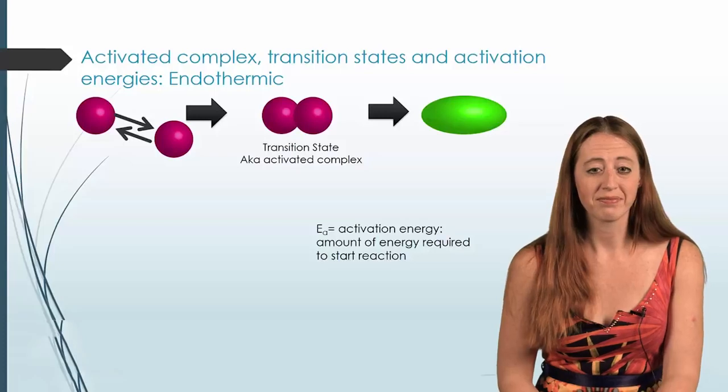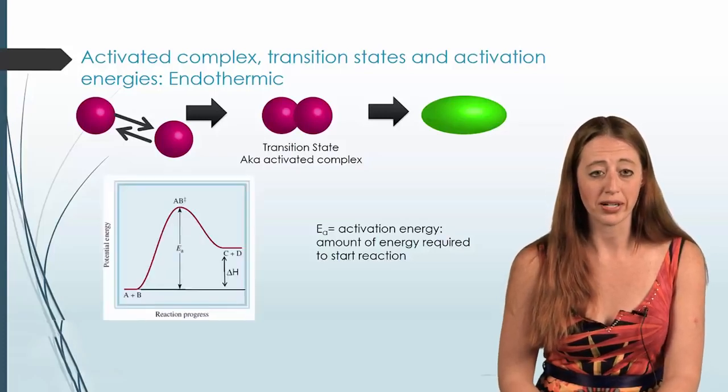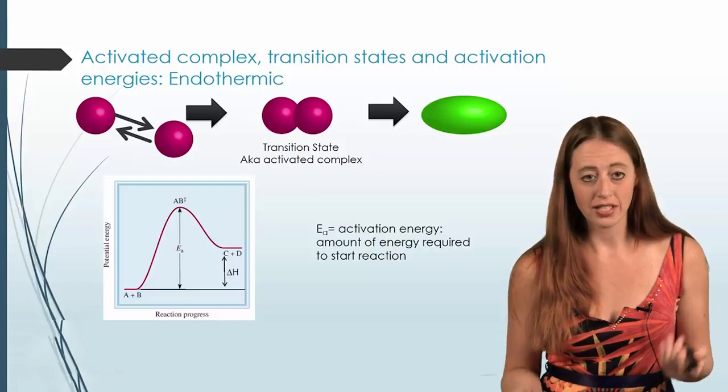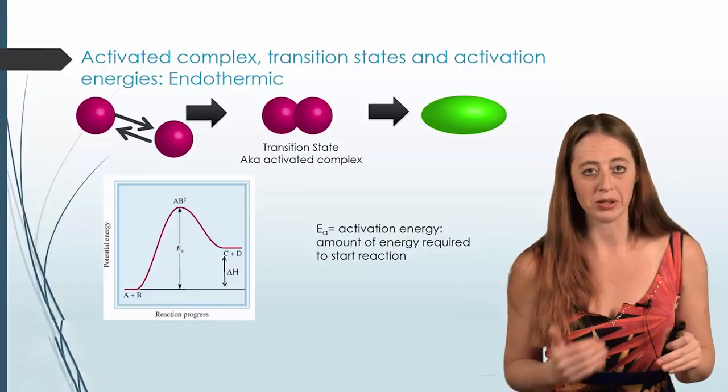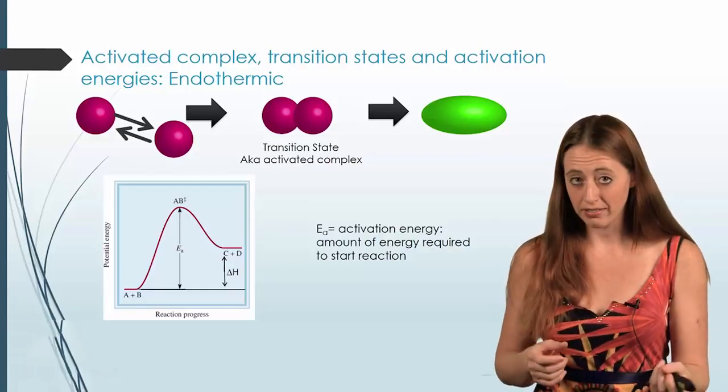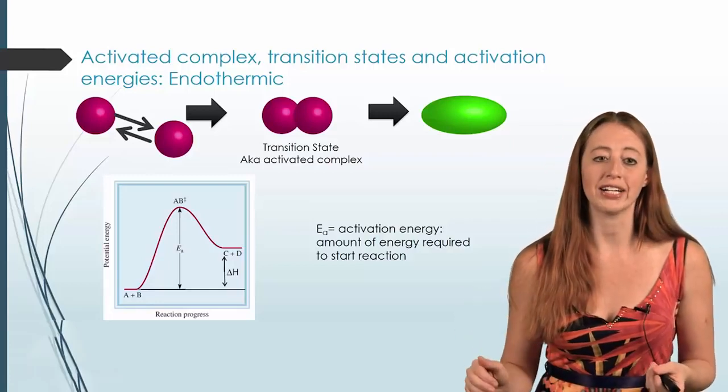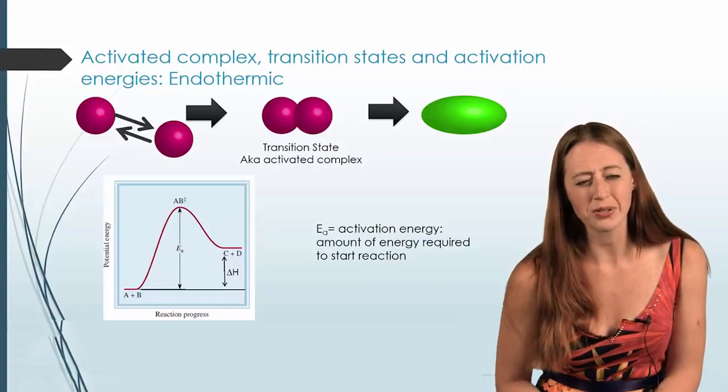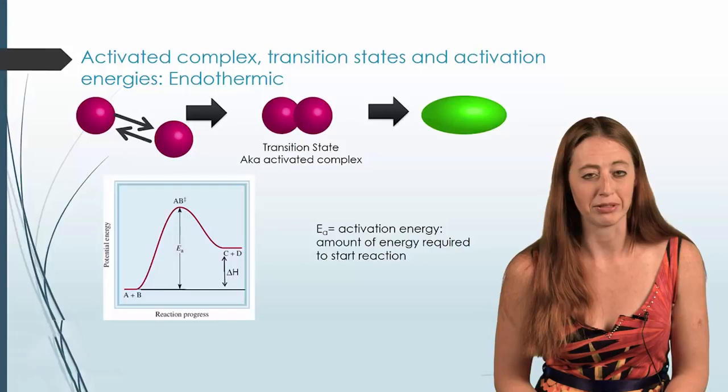So let's look at the graph. It looks almost the same as before. Except that now, your EA is still going from AB up to your transition state. But if you look at your relationship between CD and AB, you can see that your products are higher. Your products are higher than your reactants. And so your delta H is therefore different because of that.